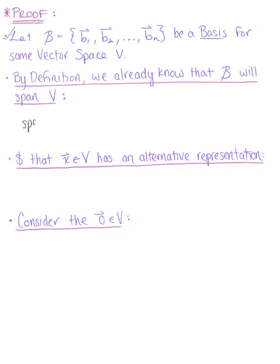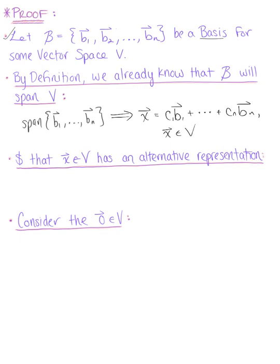The span of the set of vectors b sub 1 all the way to b sub n. Since we know that the span of a set of vectors is the collection of all possible linear combinations of those vectors, we can say that for some vector x in v, we can write x as a linear combination c sub 1 times vector b sub 1 plus all the way to c sub n times vector b sub n, where x is in vector space v.